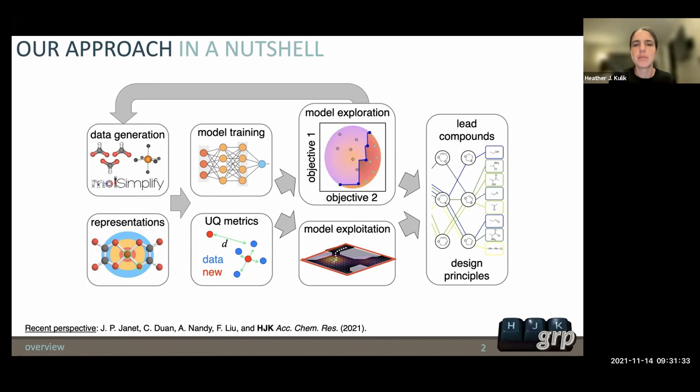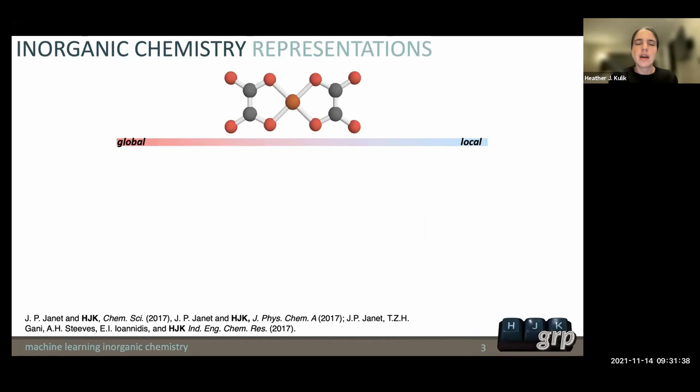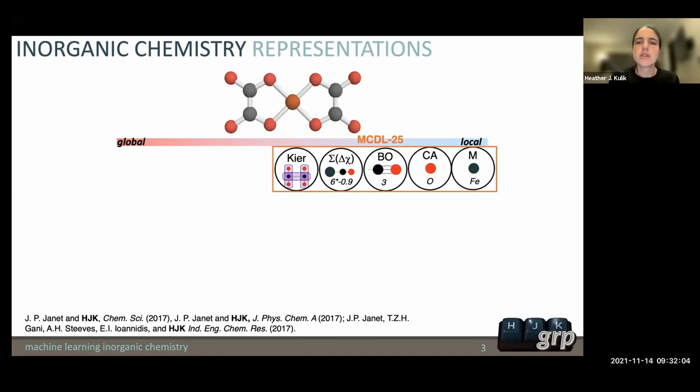Our goal at the end of all of this is to discover new design principles and new materials that are predictive from a purely computational perspective of things that could be realized experimentally someday. We have to keep in mind not just model uncertainty, but DFT method uncertainty. When we first got into this, one of our earliest focuses was thinking about how do you represent a transition metal complex to a machine learning model when you're relatively data poor.